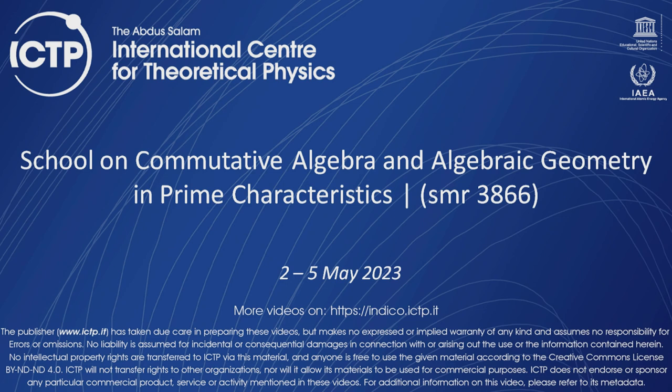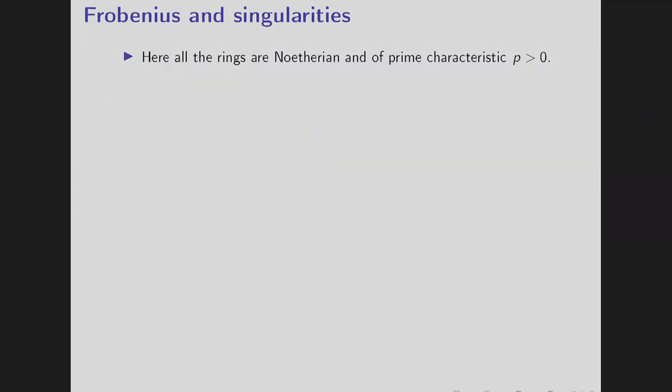To work with Professor Mathieu Barbarou. So here all the rings we assume are Noetherian and of prime characteristic. And the advantage of prime characteristic is we have Frobenius map.